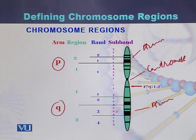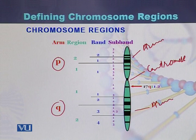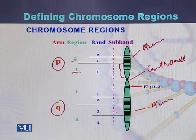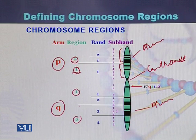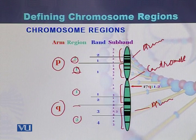Each chromosome has two arms, and each of these arms has regions. The larger fragments present on the P arm are written as region one and region two. Similarly, on the Q arm, region one and region two represent the respective parts of that arm.